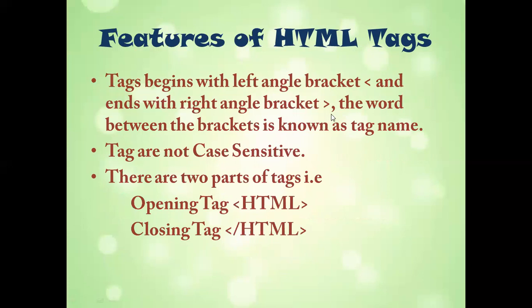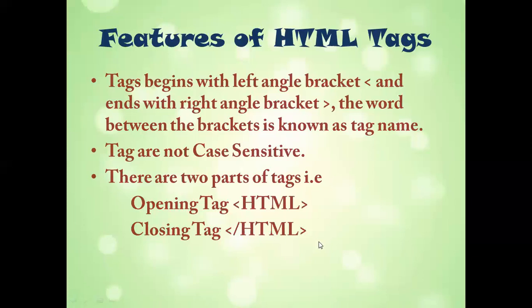The features of HTML tags are: tags begin with a left angle bracket and end with a right angle bracket, and the word between the brackets is the tag name. Tags are not case sensitive — it doesn't matter whether you write in capital letters, small letters, or mixed case, because HTML is not a case sensitive language. Tags have two parts: an opening tag and a closing tag. For the closing tag, you put a forward slash before the word, with no spaces.